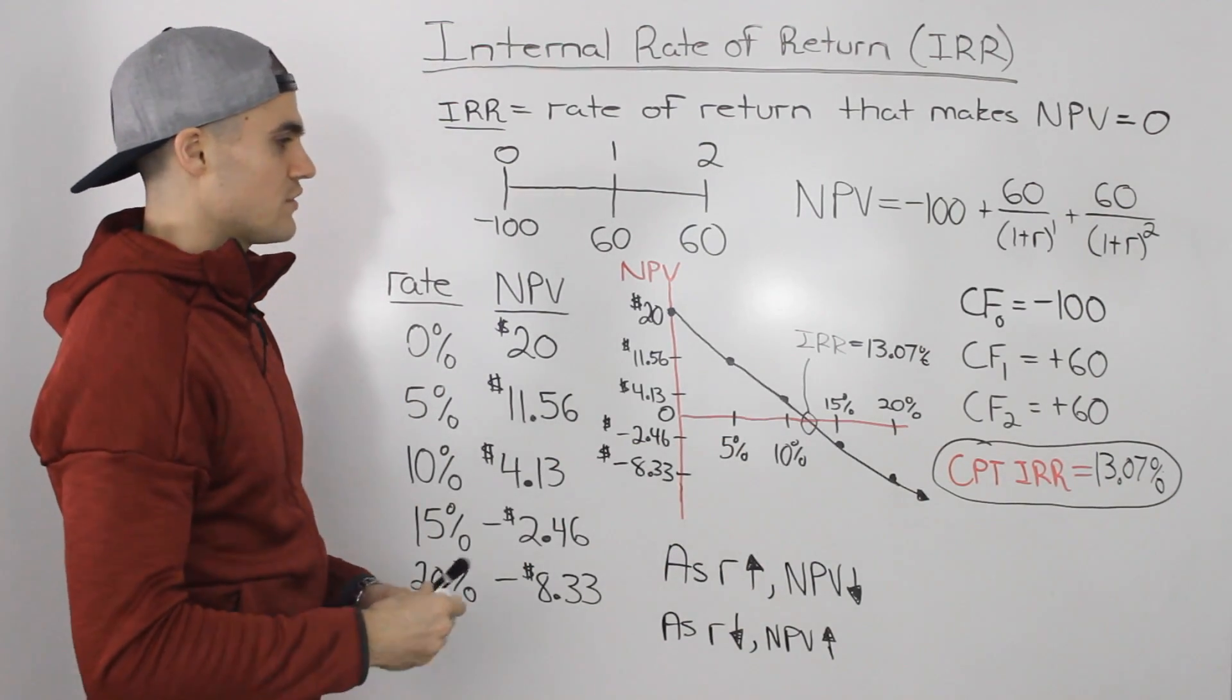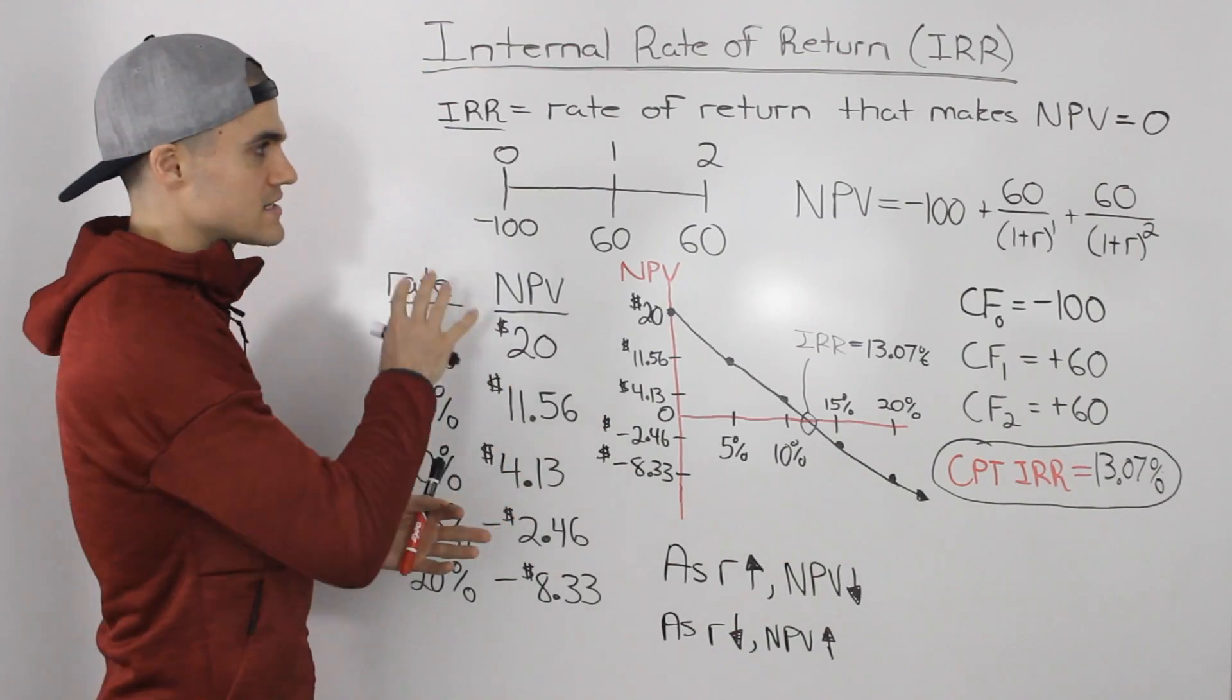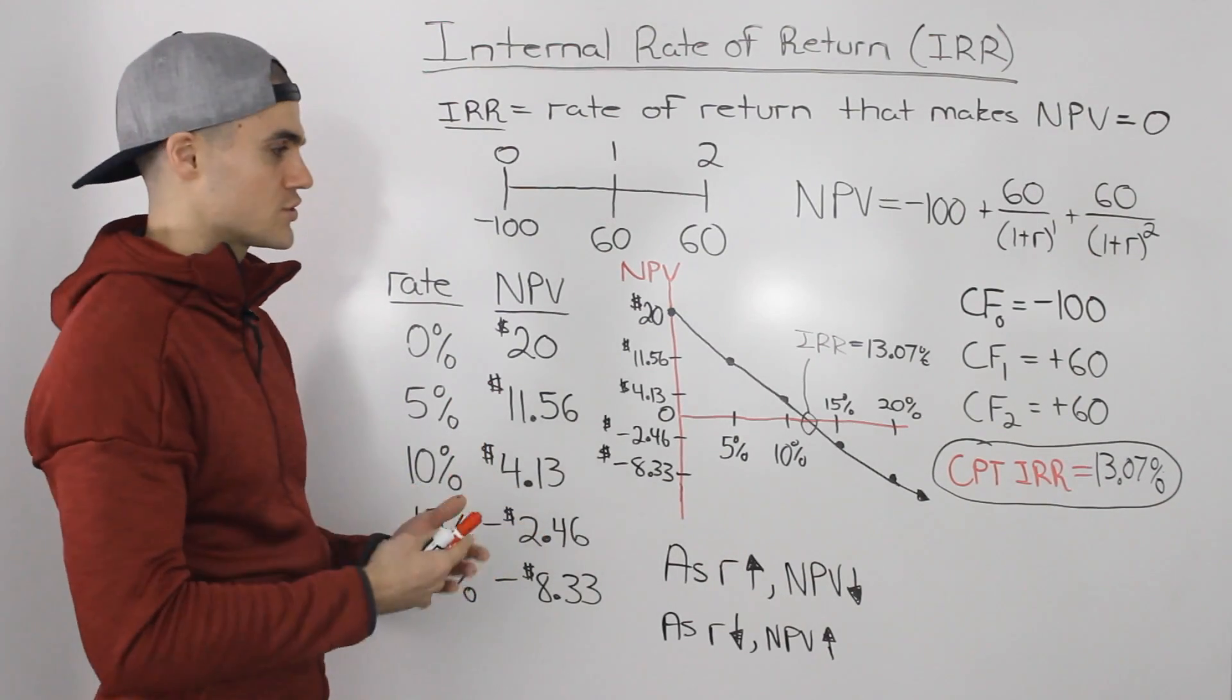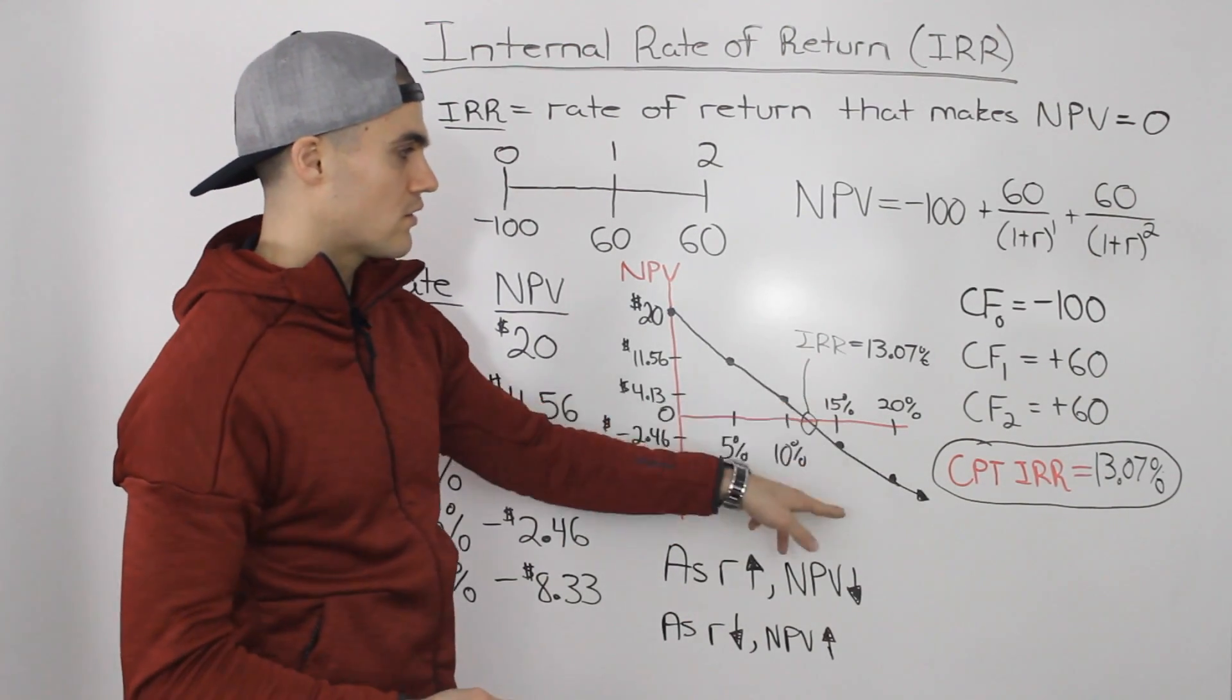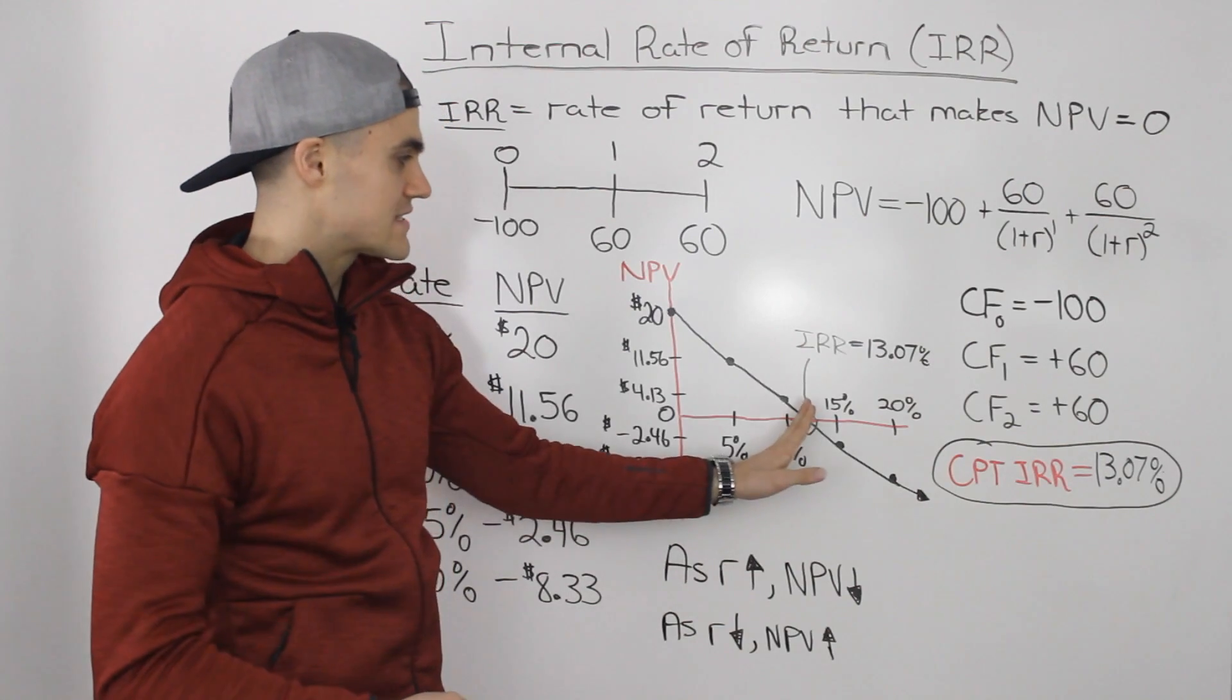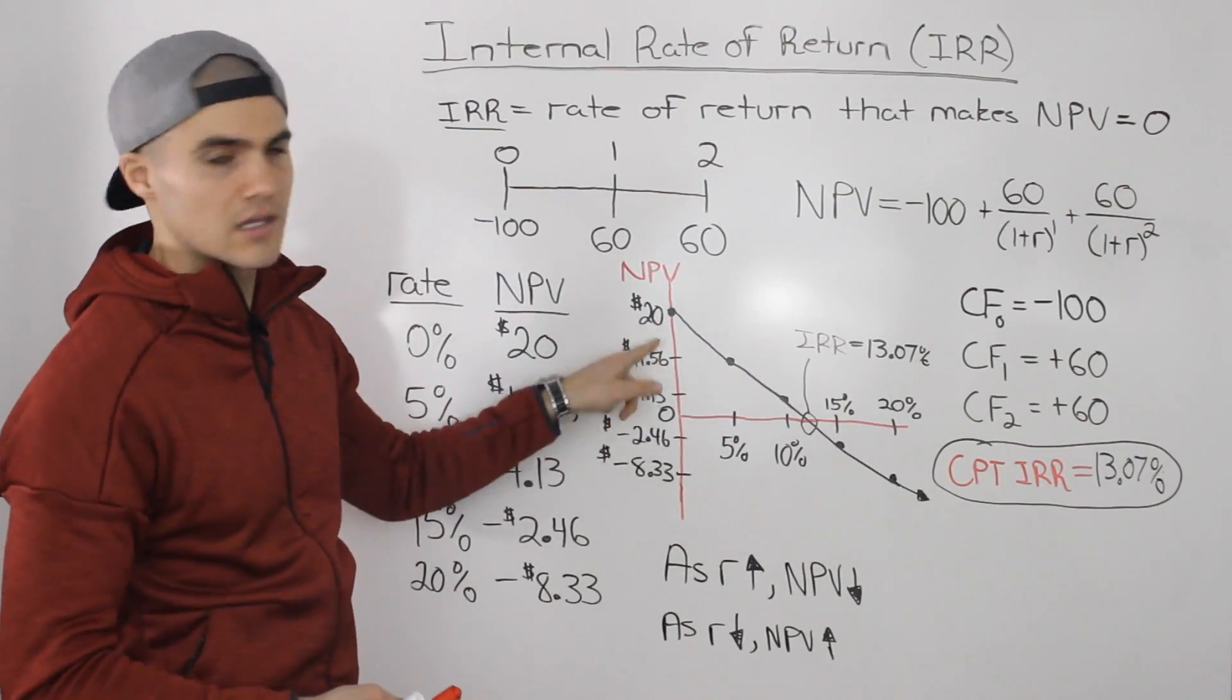So if you think about it now, we can compare our required rate of return for the project depending on which one is given. In this case there was none given, but in other questions they will be given. You can compare that required rate of return to your IRR. If the required rate of return is greater than that IRR of 13.07 percent, you know you're going to have a negative NPV value. And if it's less than that IRR of 13.07 percent, you know the NPV is going to be positive.